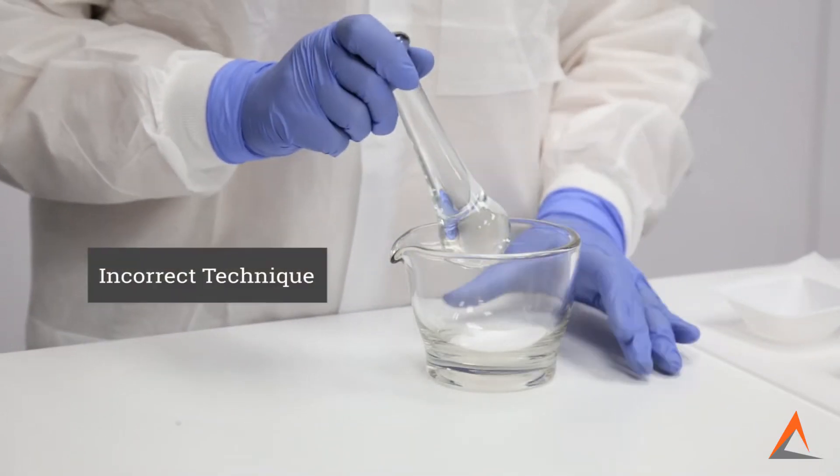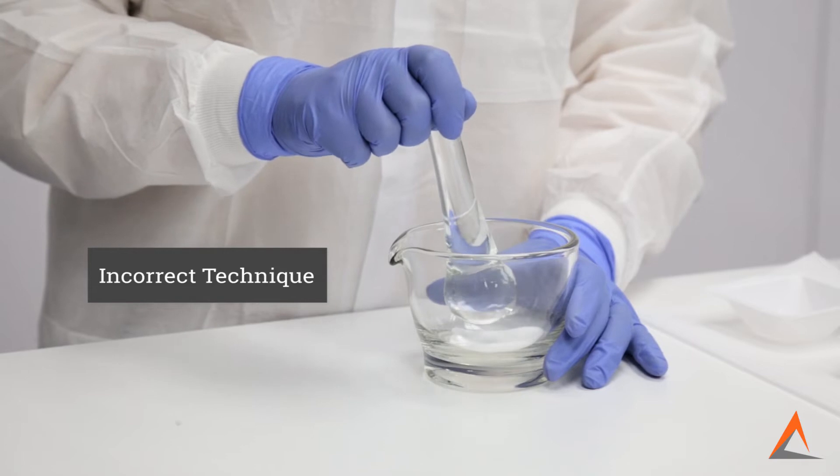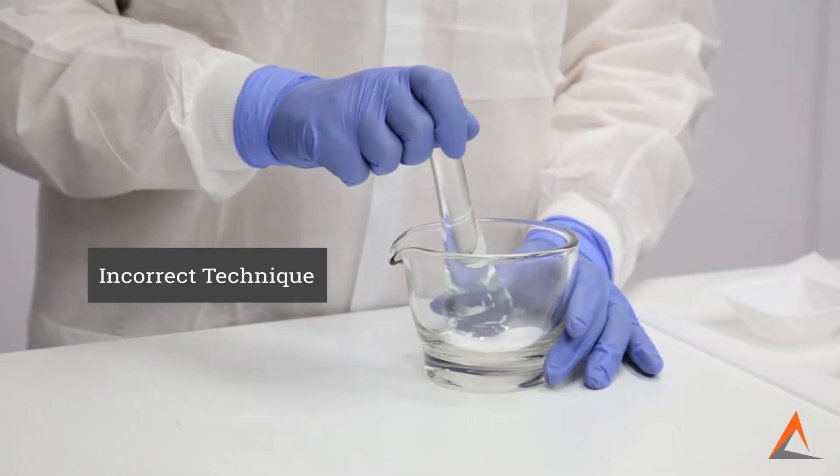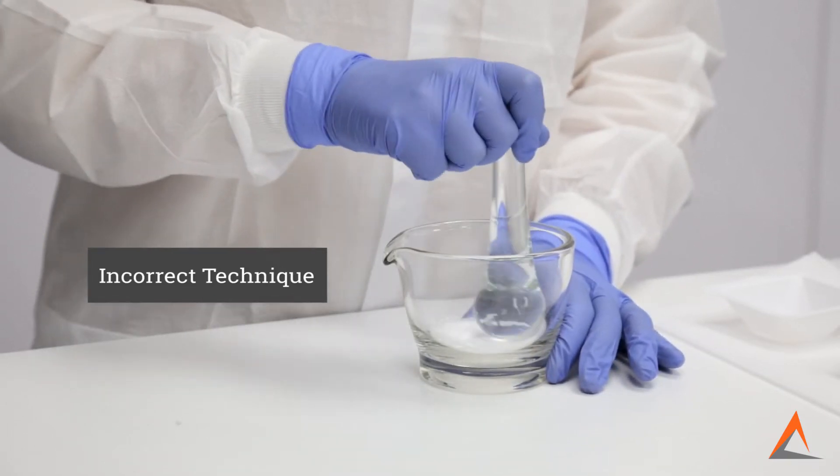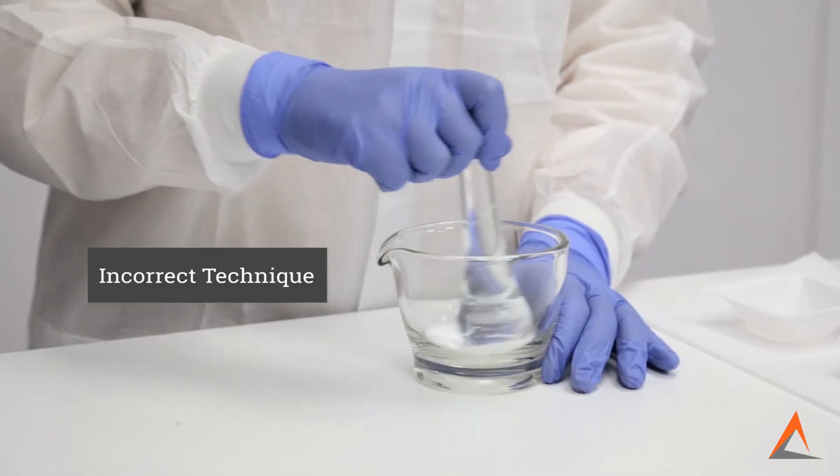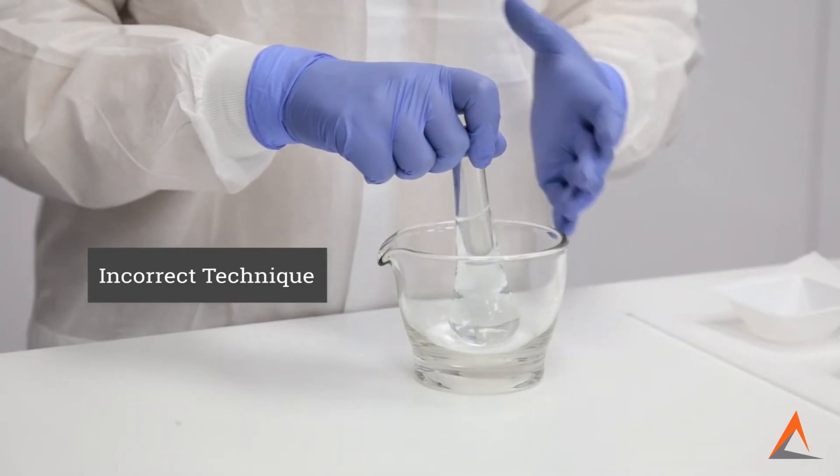What you don't want to do is lightly hold the pestle only by the top and softly move it around the mortar. This will not allow you to have enough grip on the pestle and, in turn, you will not be able to apply adequate force to grind down the particle size.